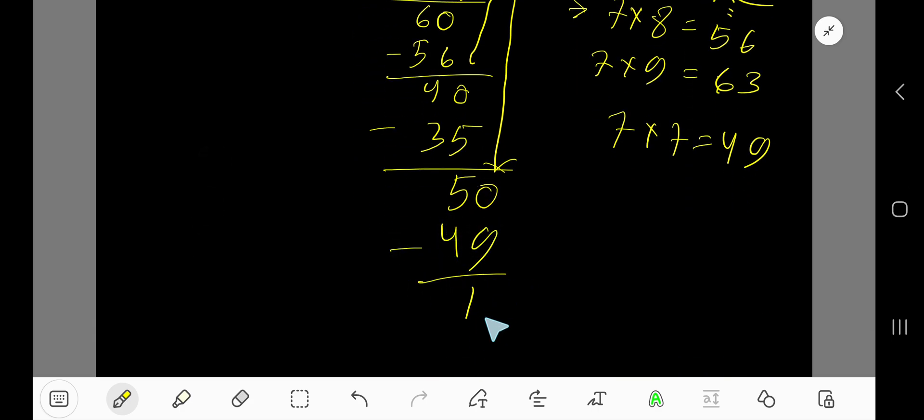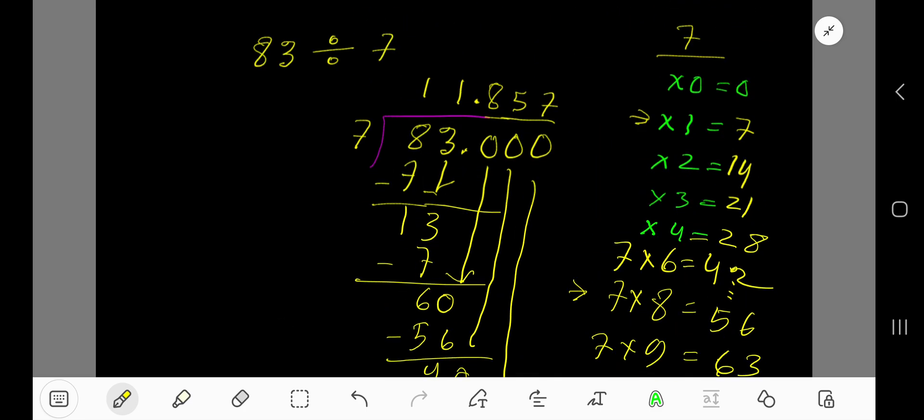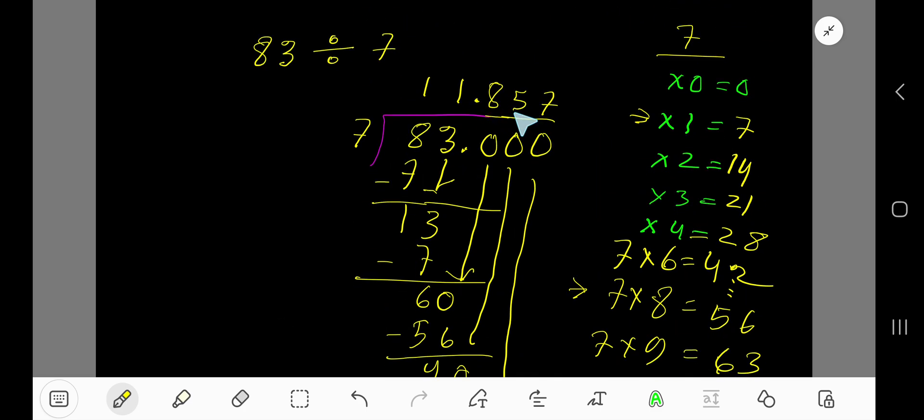Actually this process is continued. Look, after decimal we have got 3 digits, so you can stop your division process. So your answer is 11.857. You can write approximately.